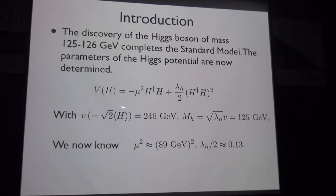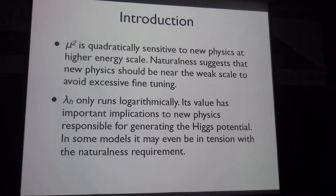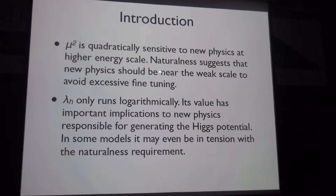The quadratic mass-squared term receives quadratically divergent contributions from quantum corrections, making it sensitive to new physics at high energy scales. This is the hierarchy problem. Naturalness suggests that new physics should appear near the weak scale to cut off this quadratic divergence and avoid excessive fine tuning.